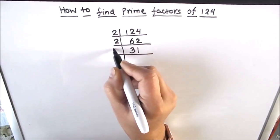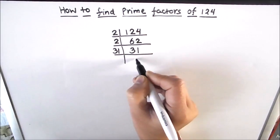Now 31 is a prime number, it is only divisible by the number 31. So 31 times 1 is 31.